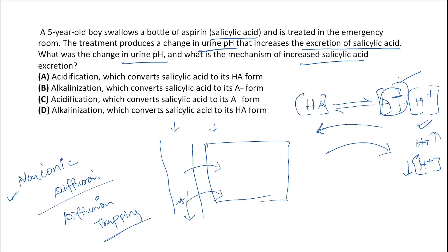Since salicylic acid is a weak acid, an alkaline (higher) urine pH facilitates its excretion by diffusion trapping — converting it to the ionic salicylate form. The correct choice is alkalinization of the urine, which converts salicylic acid to salicylate in its ionic form, trapping it in the tubular lumen for excretion.